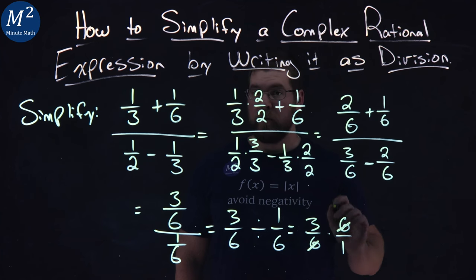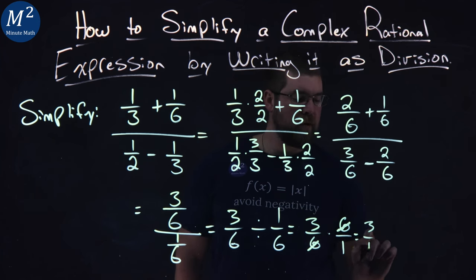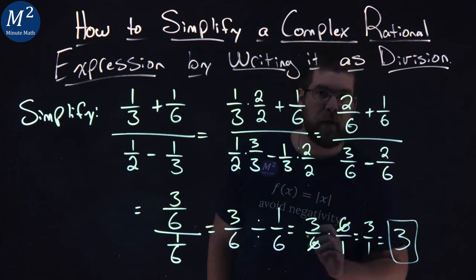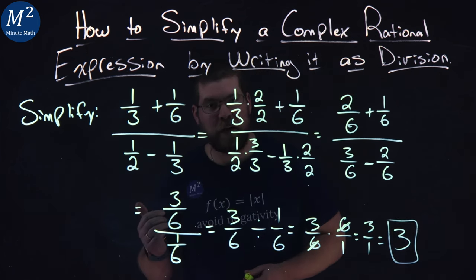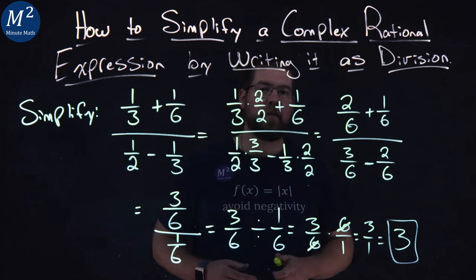The 6's cancel here, numerator and denominator, and we have 3/1, which is just 3. And there we have it. When it's all said and done, our big expression with fractions here simplified to just be 3.